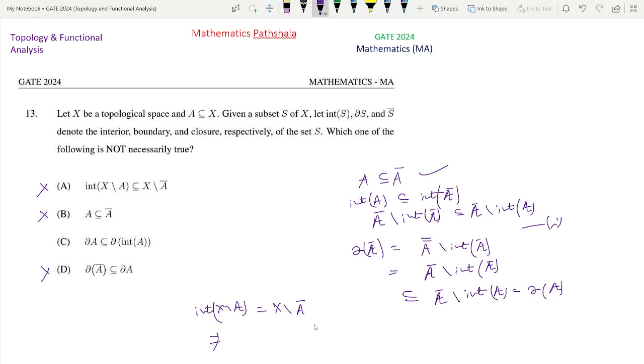Now look at option C. For C, if we take simply say A equal to Q, subset of R with the usual topology, then clearly our delta A will be A bar minus int A and clearly A bar will be R. We know that and int A is phi. So this will be phi and also int A is phi. So option C implies that R subset of phi, which is not true. So this is not the correct option.